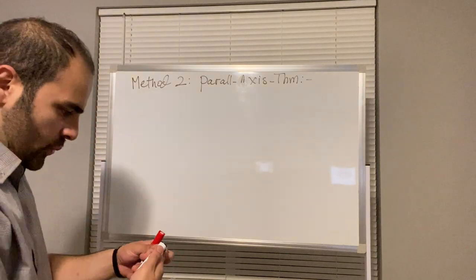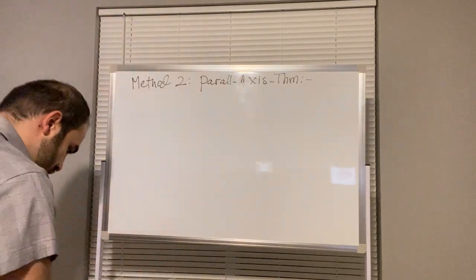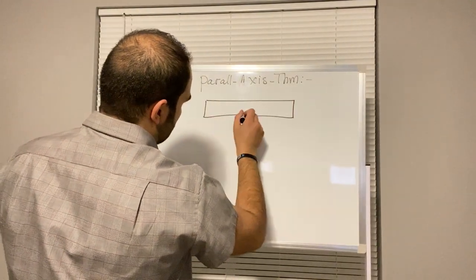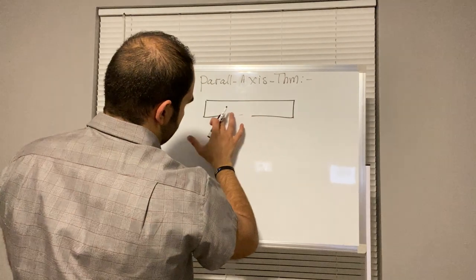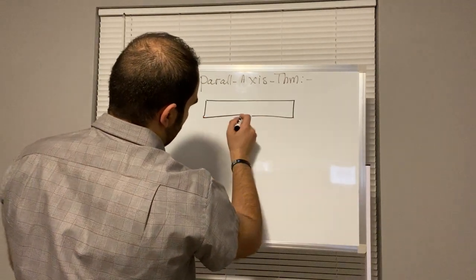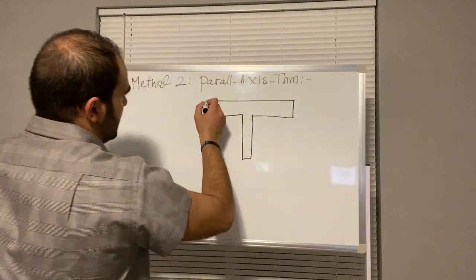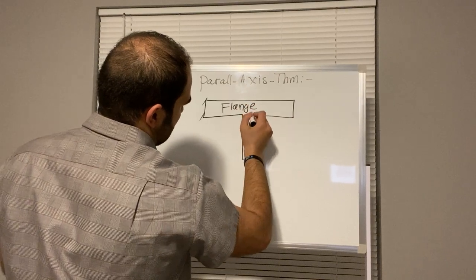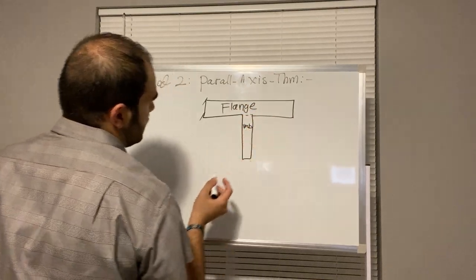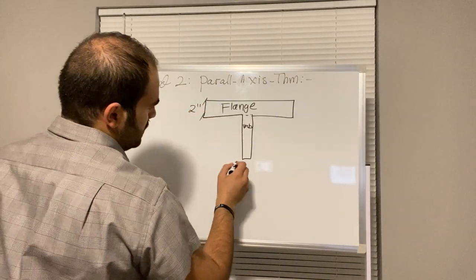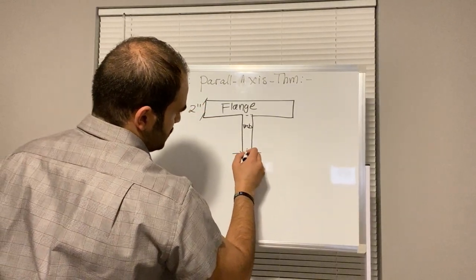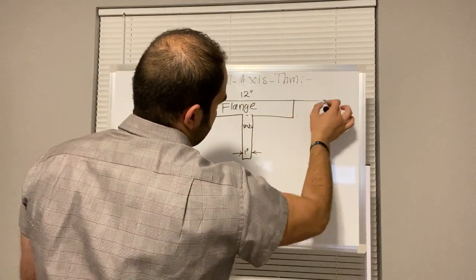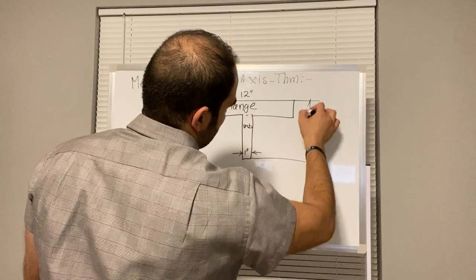So let's say that we have a cross-sectional area that looks like this. This is what I called the flange. We call this web. So let's say we have 2 inches here. Obviously not to scale, this is 1 inch. We're going to call this 12 inches, and we're going to call the total depth to be 10 inches.